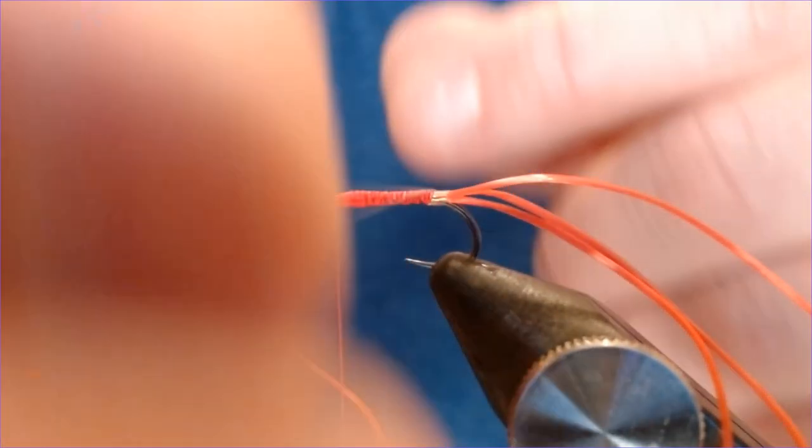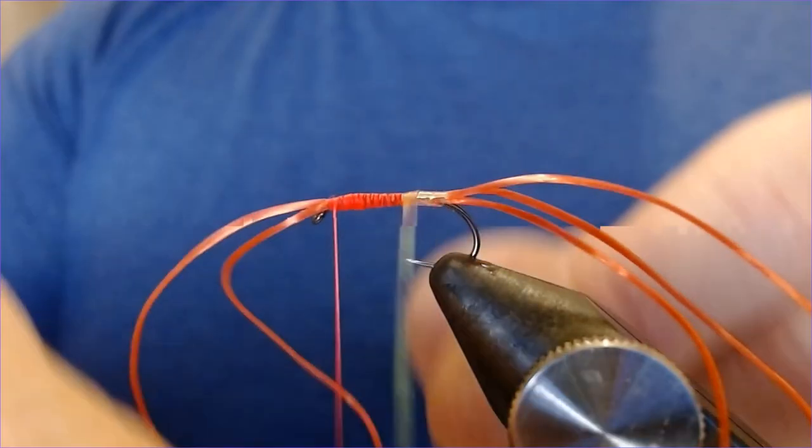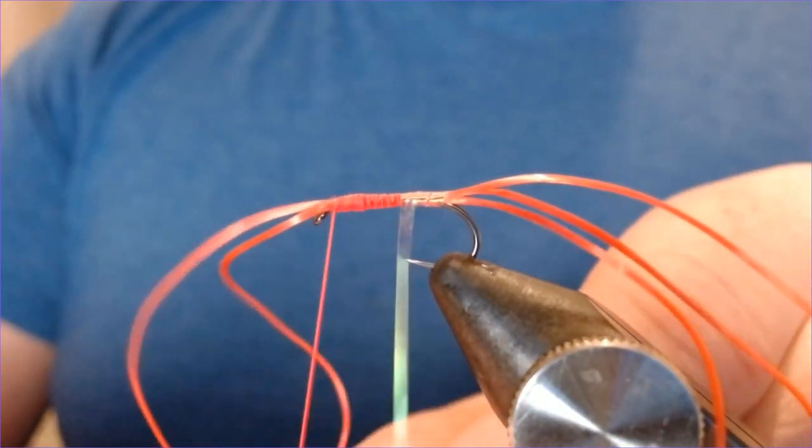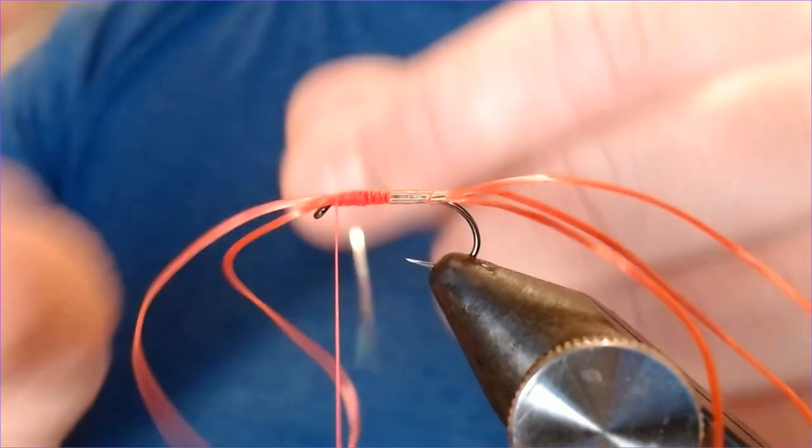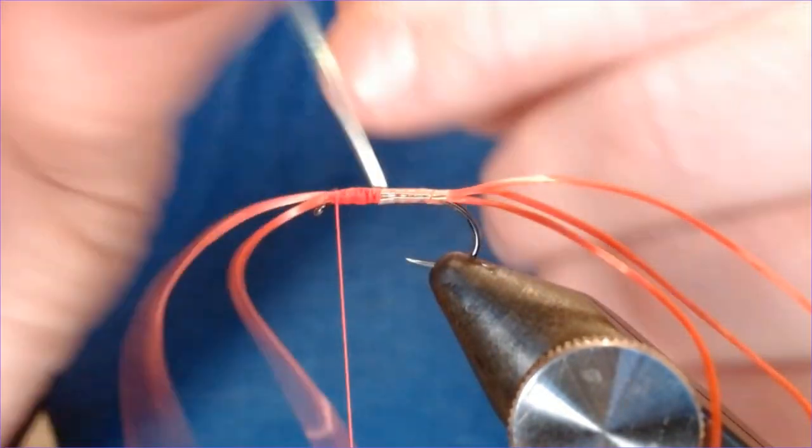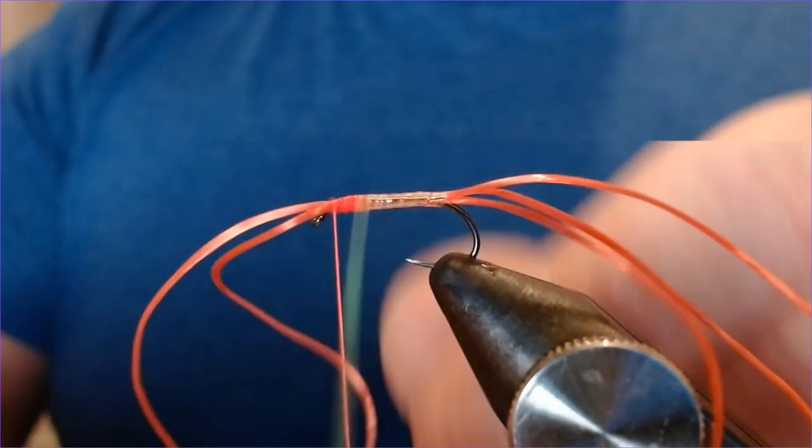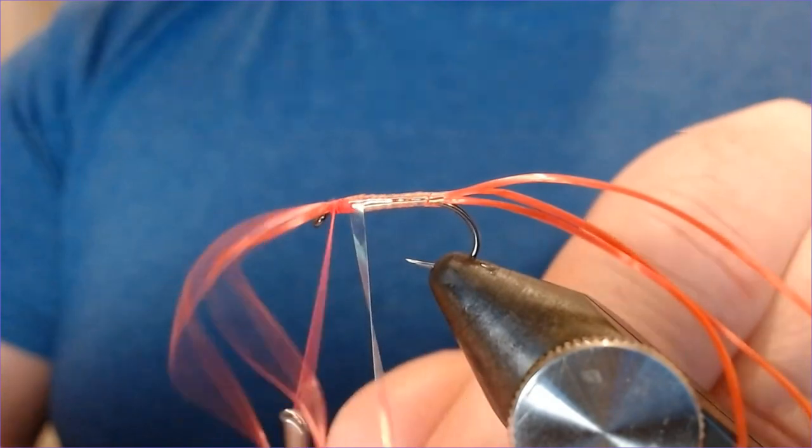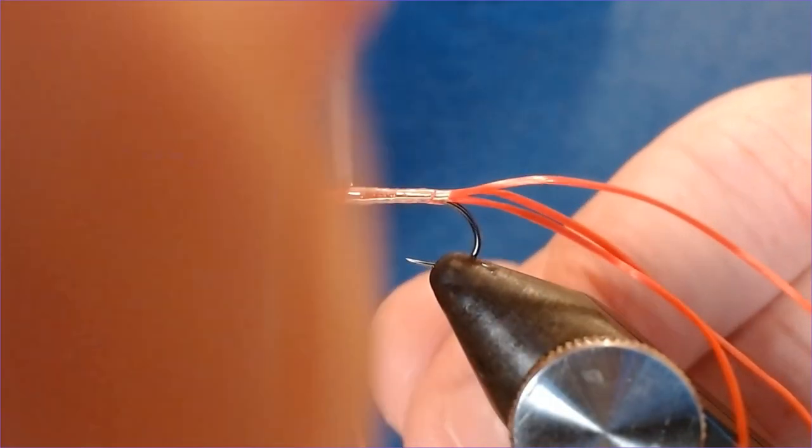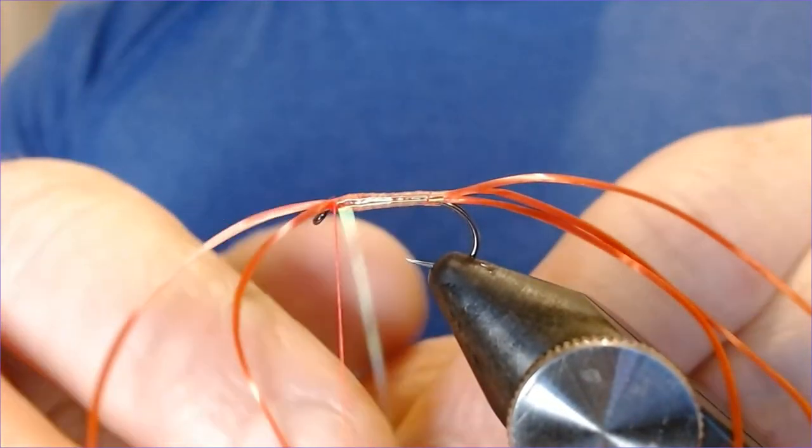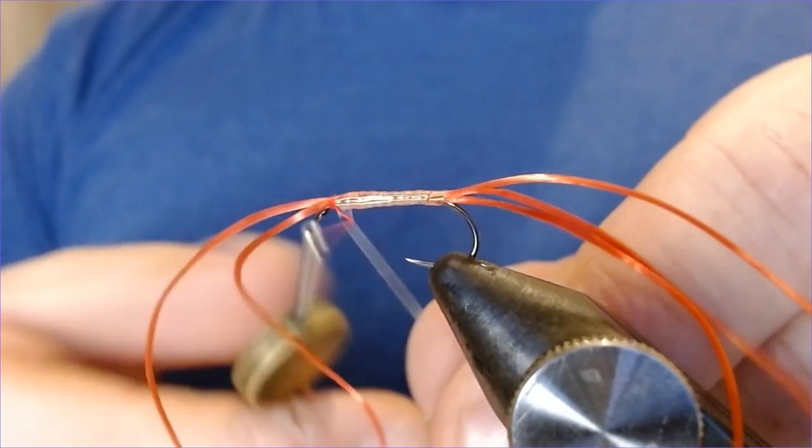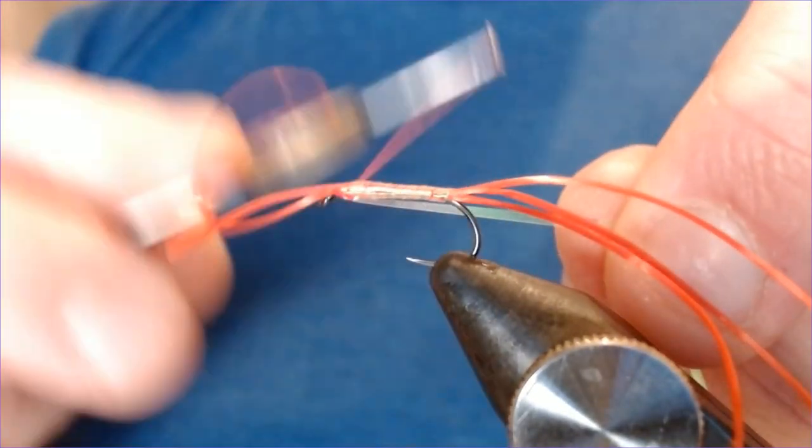With the uni mylar, just kind of wrap that back up the body just to create an underbody. All I want this to do is just shine through when we overwrap it with the red flexi floss when we rib it. And it certainly shines after a couple of coats of varnish. Just catch it in up there, and just trim it off. Lovely.